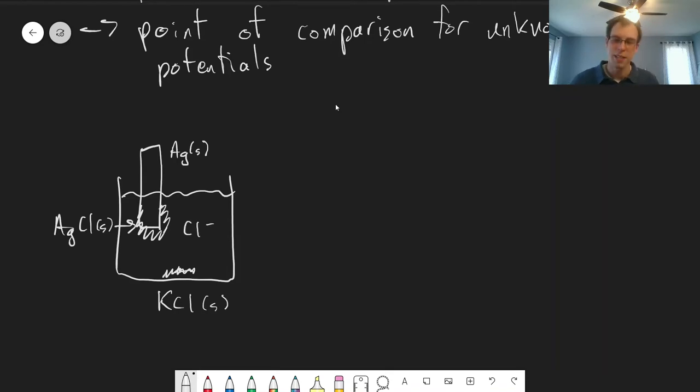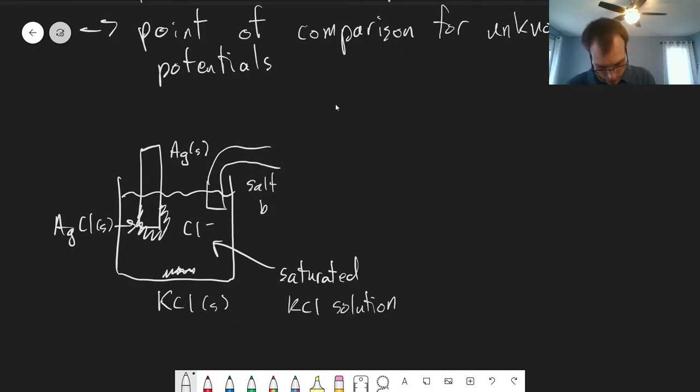This is a saturated KCl solution. This would be one half of an electrode—we'd have a salt bridge here. For now, I'm just going to ignore what's in the other half; the other half will be our unknown. But this is the basic idea behind a silver/silver chloride reference electrode.